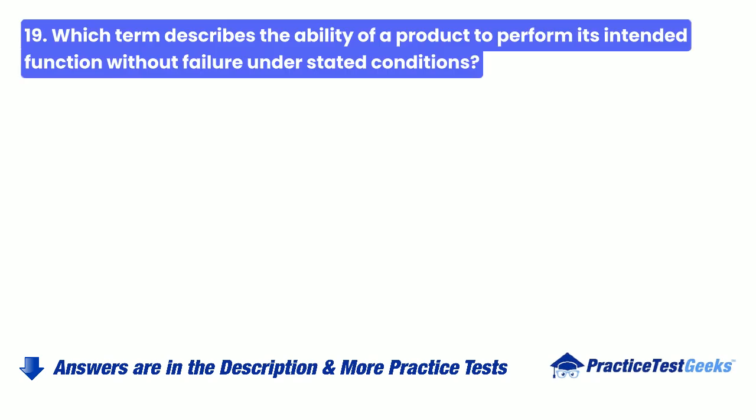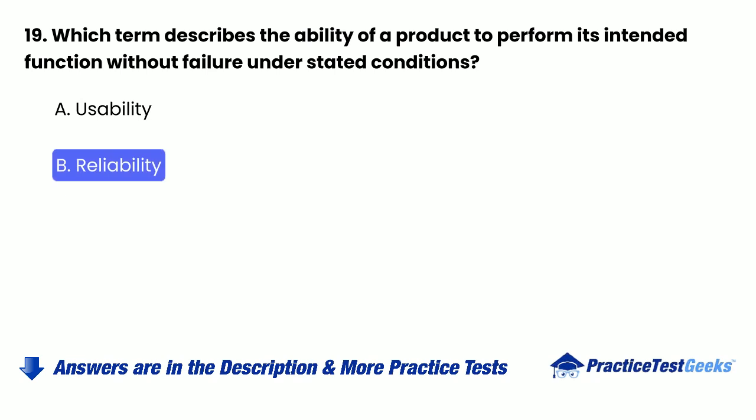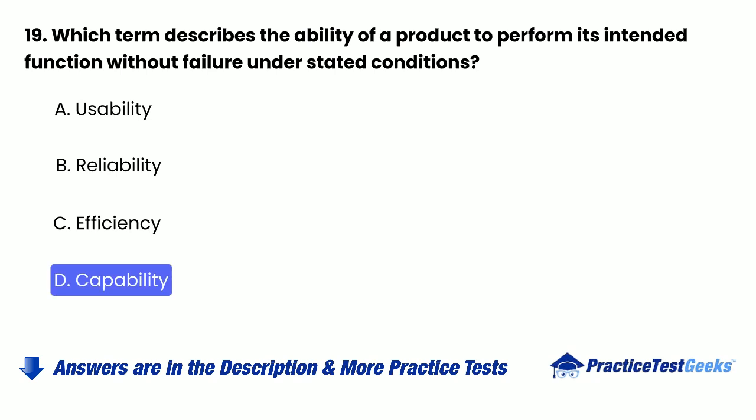19. Which term describes the ability of a product to perform its intended function without failure under stated conditions? a. Usability. b. Reliability. c. Efficiency. d. Capability.